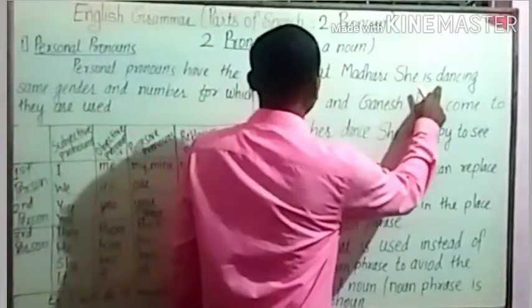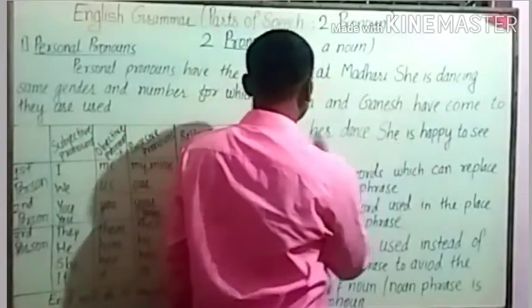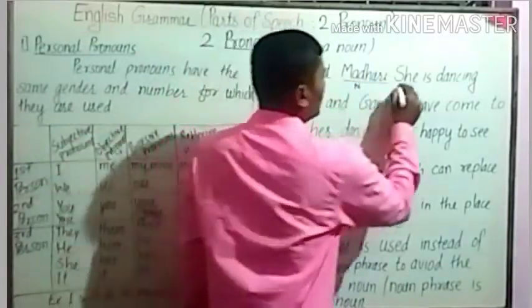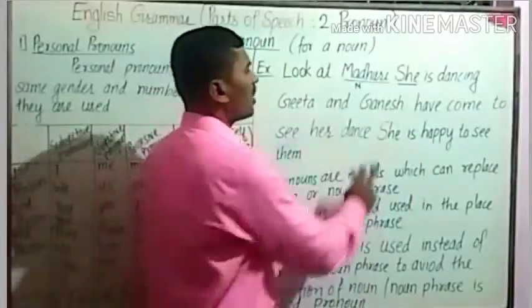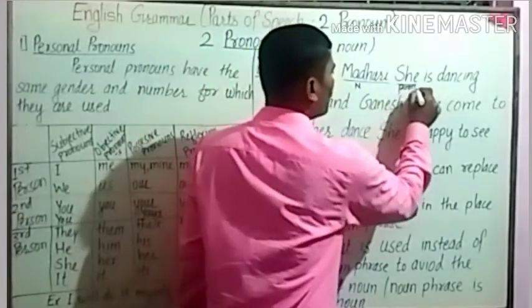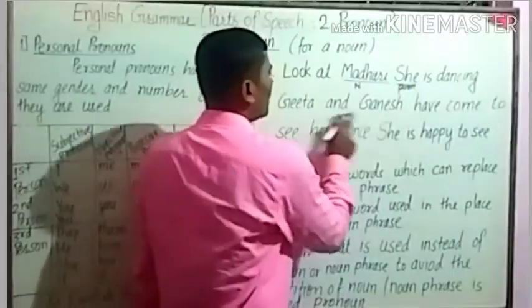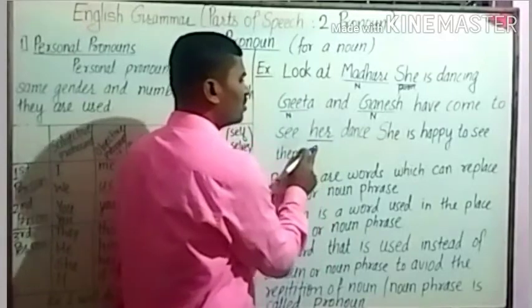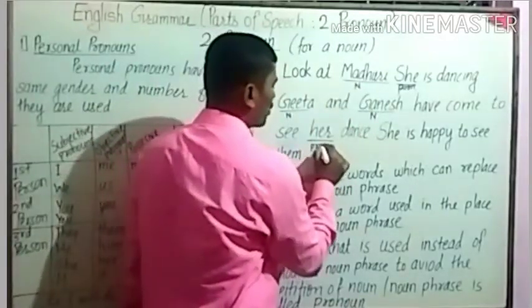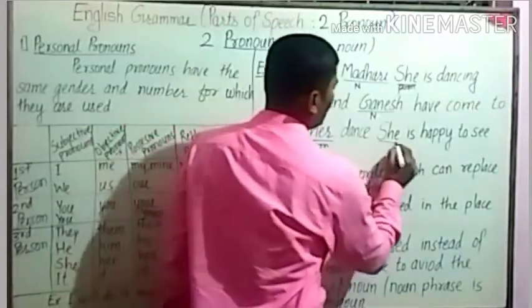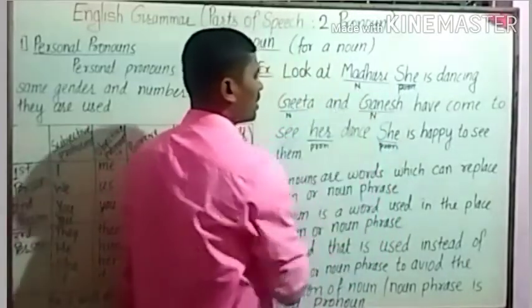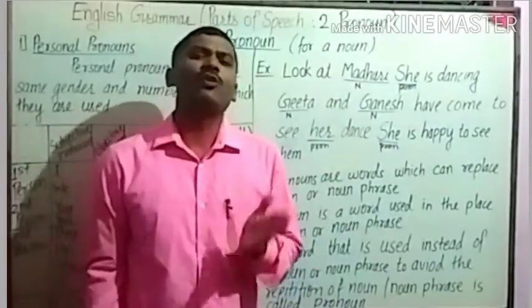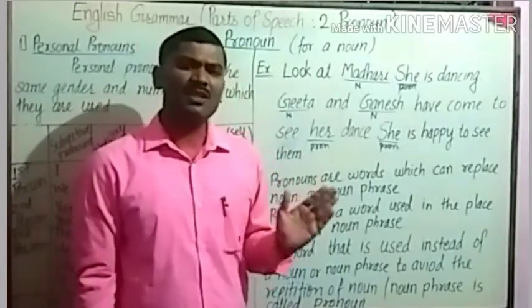Look at Madhuri. She is dancing. Gita and Ganesh have come to see her dance. She is happy to see them. Here, Madhuri is a proper noun. The word 'she' is used to avoid repetition of this noun — so it is a pronoun. Pronoun means 'for a noun.' The word 'her' is used to avoid repetition of Madhuri — so it is a pronoun. 'Them' is also a pronoun used to avoid repetition of Gita and Ganesh. Here we understand what a pronoun is.